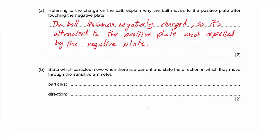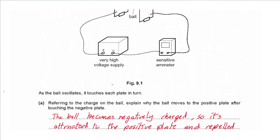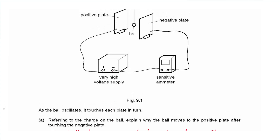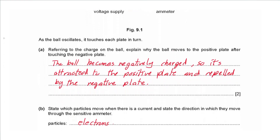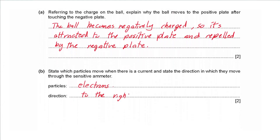Part b: state which particles move when there is a current and the direction they move through the sensitive ammeter. The particles that move are electrons. They move away from the negative terminal of the battery and towards the positive terminal — through the sensitive ammeter from left to right.